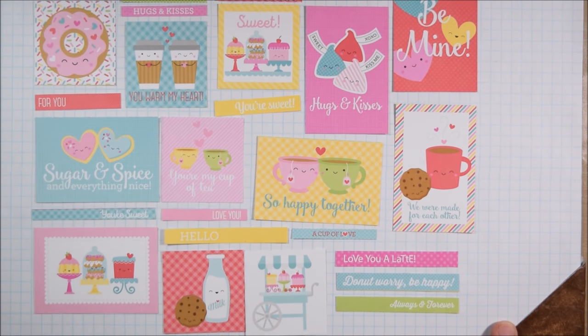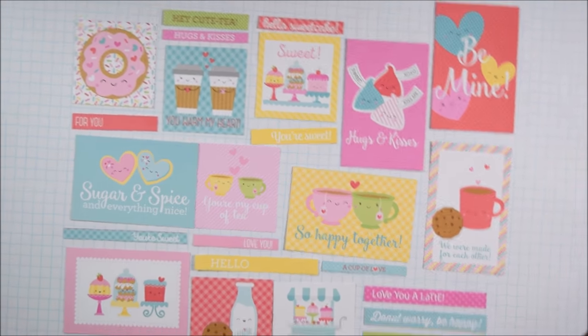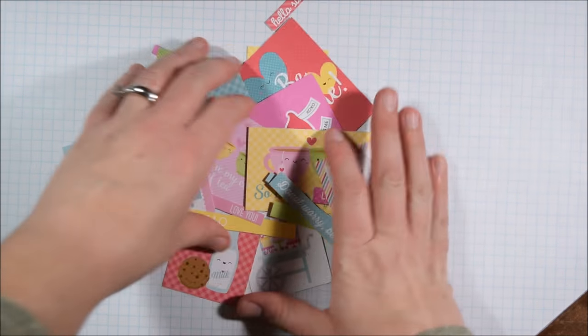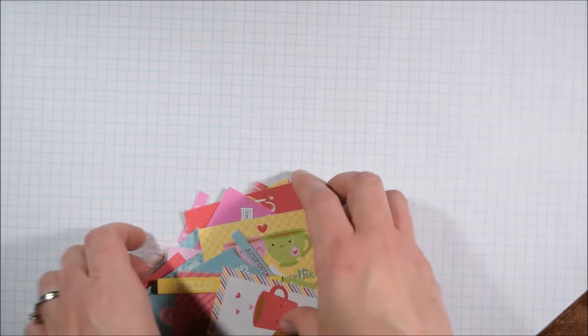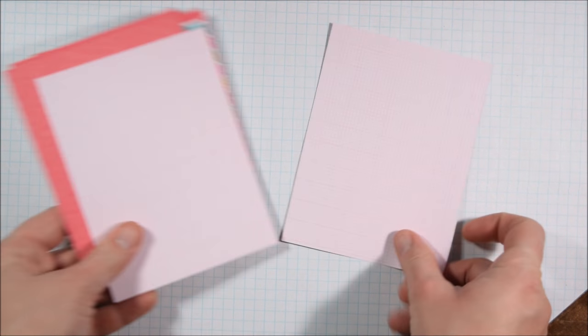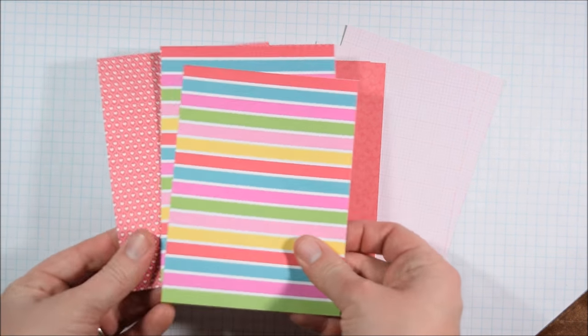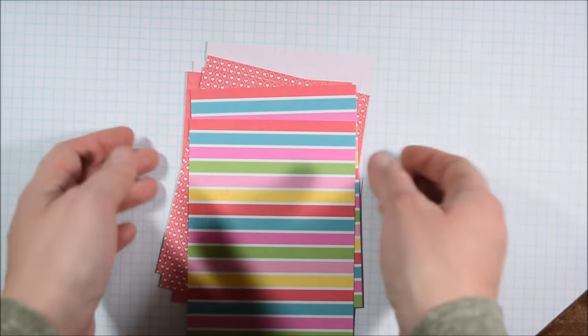But I selected the different cutaway or cut apart designs and I cut them all up. And I did that off camera because you guys know how to make straight cuts. But if you take one of the Doodlebug pads and cut all that out, that's going to help you be able to make a lot of cards quickly.